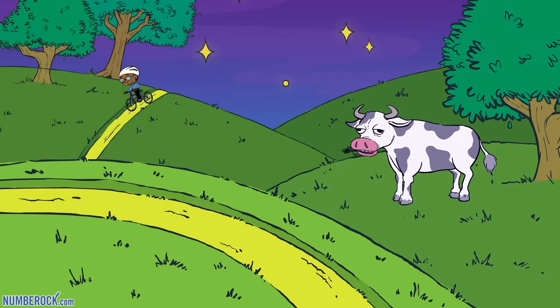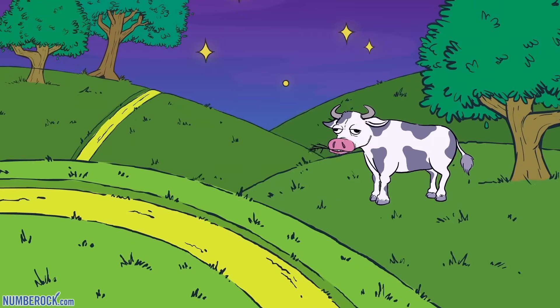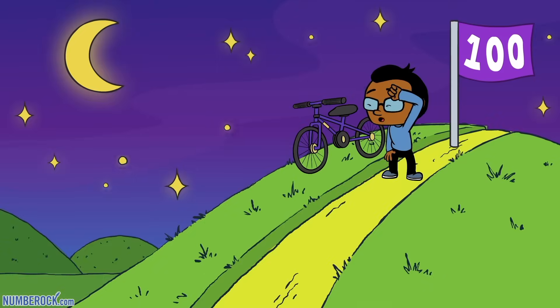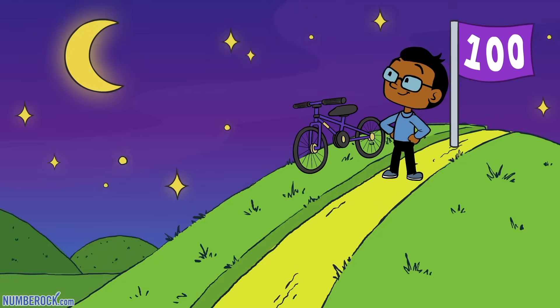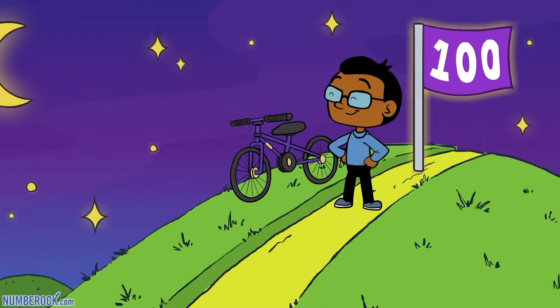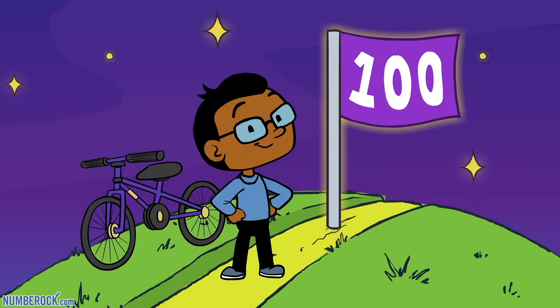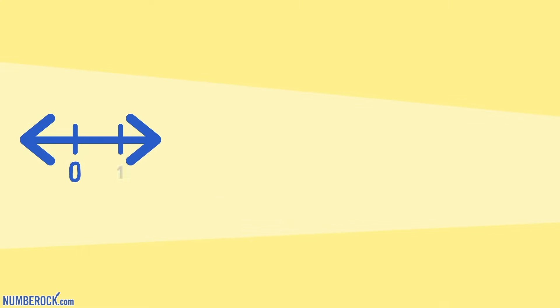Rob rode his bike all day through the countryside, with starlight from the Milky Way, and he finished his ride. His 100-mile journey required persistence — now let's see how he tracked his distance.